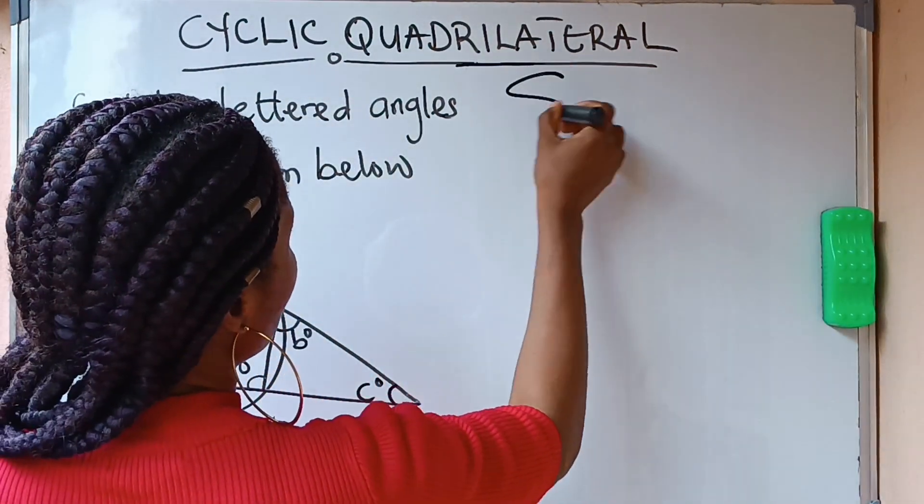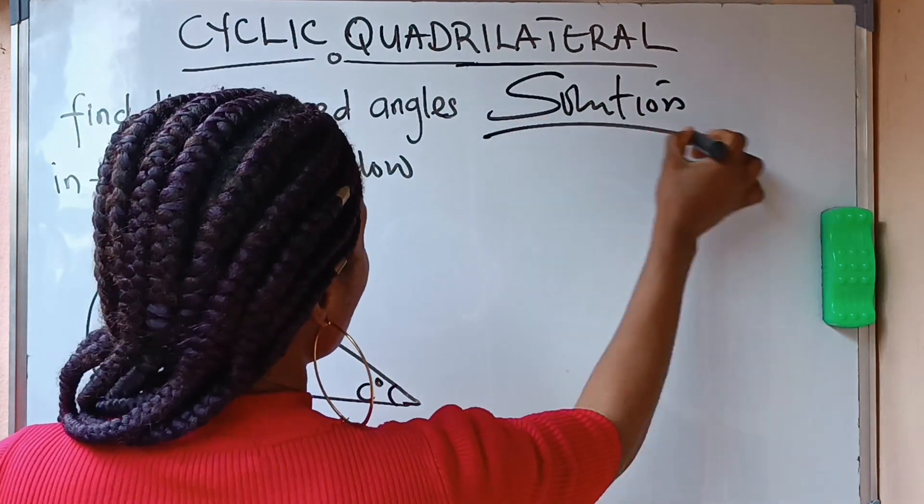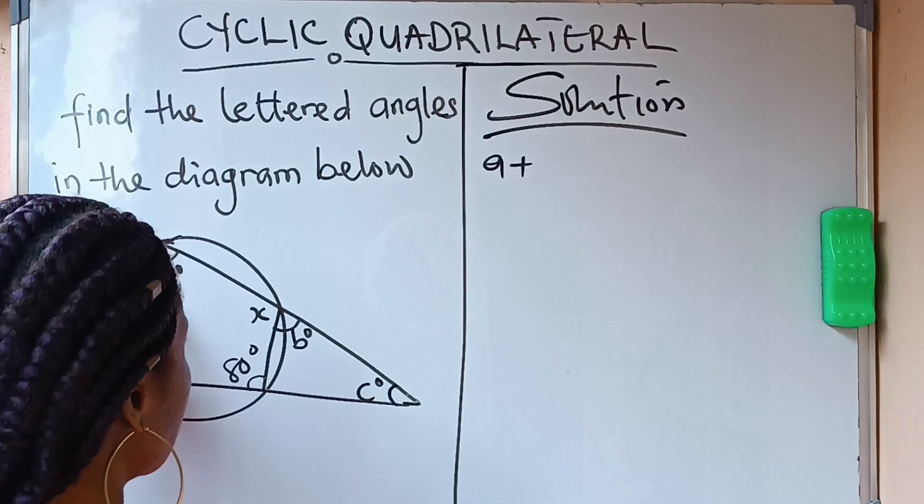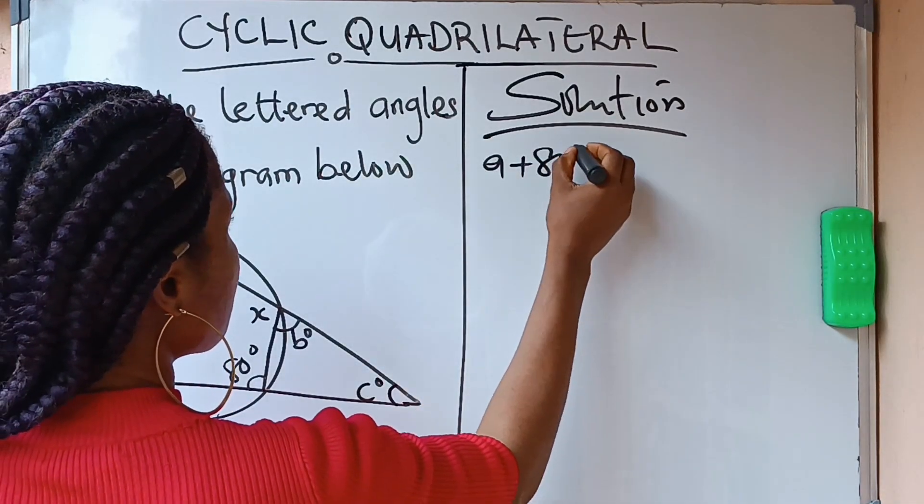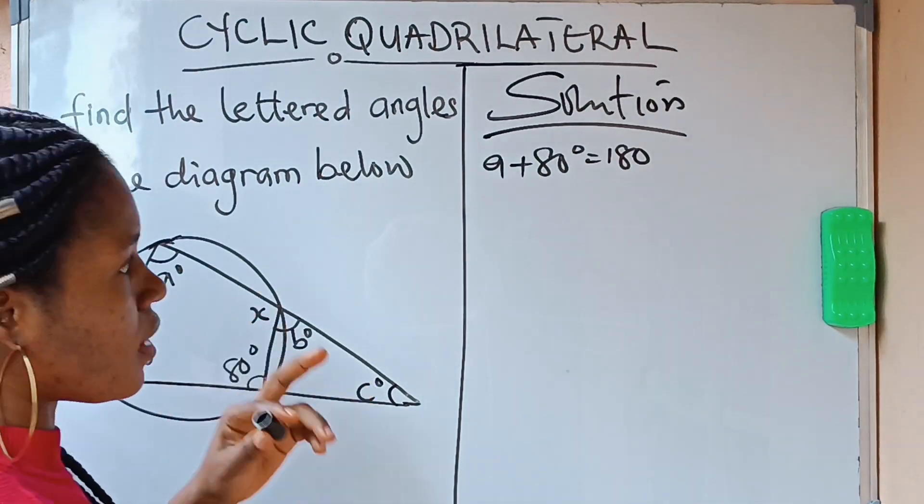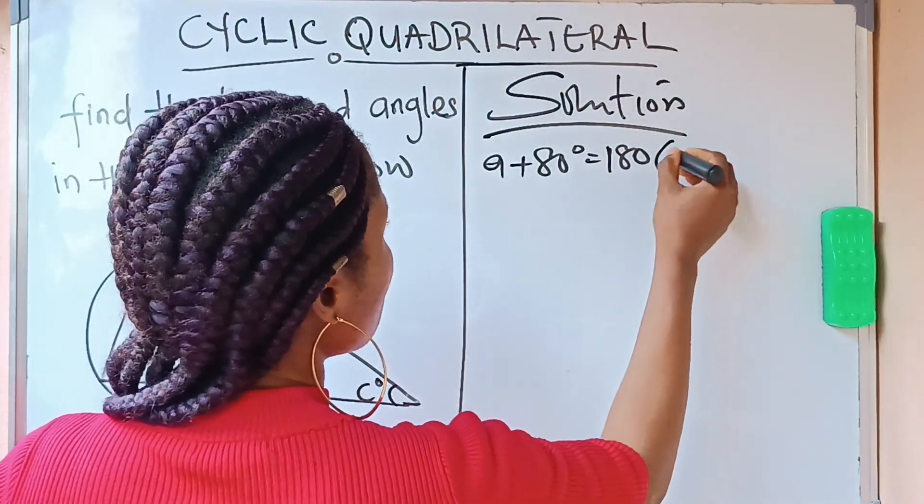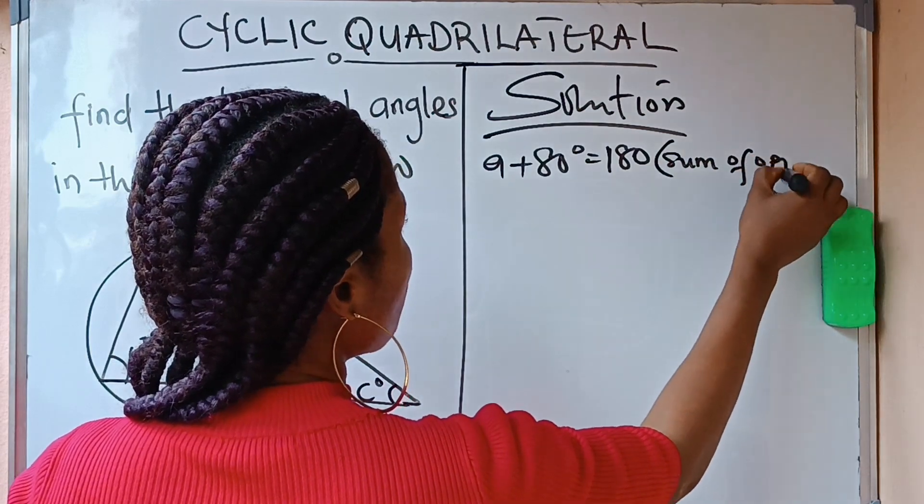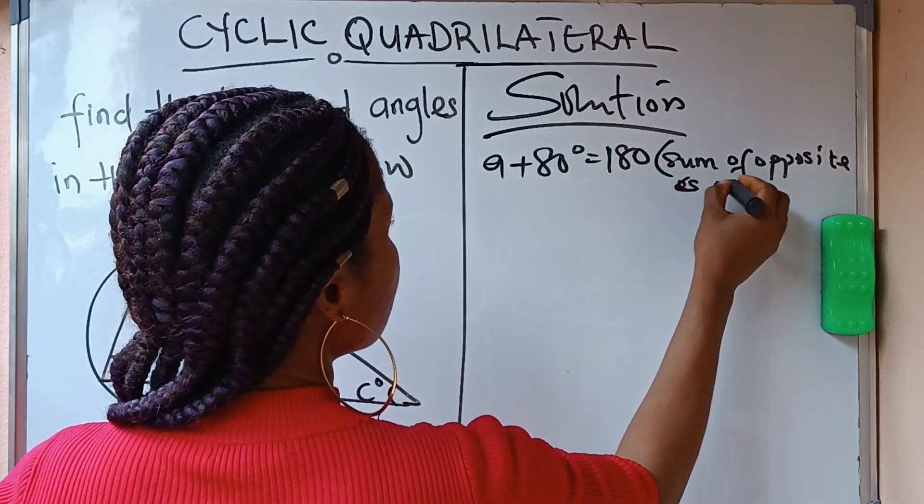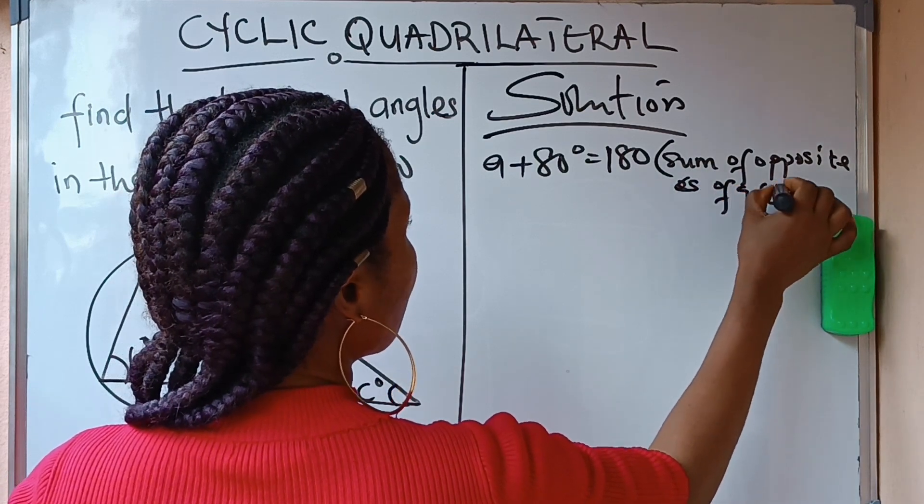Solution. So what it means is that A, this A you have here, plus this 80 degrees, it's supposed to give you 180 degrees. Based on what I told you, the reason is sum of opposite angles of a cyclic quad, of a cyclic quad.